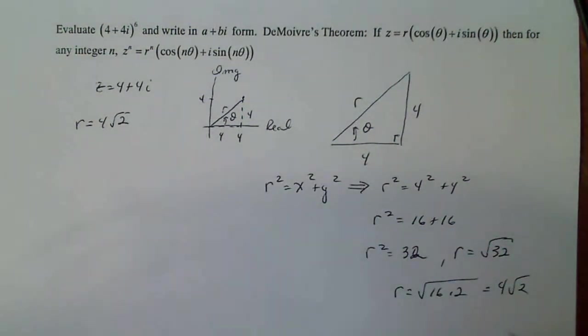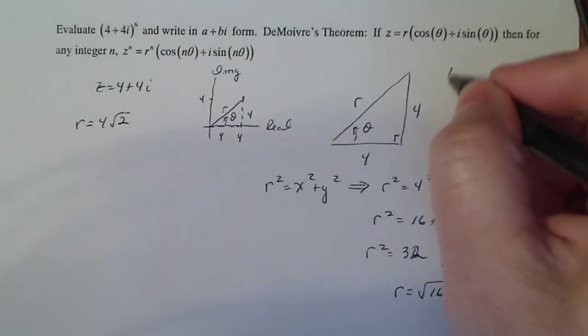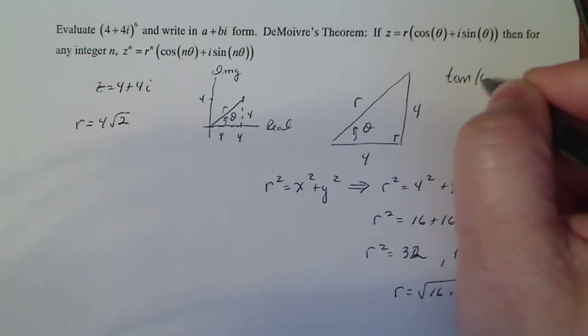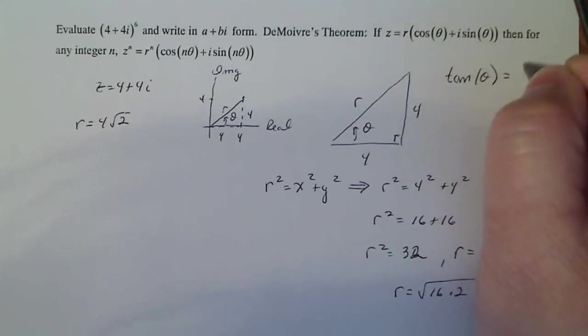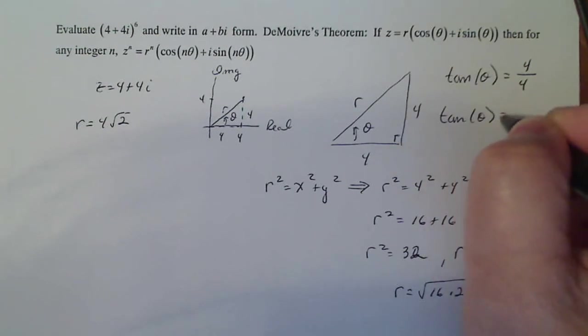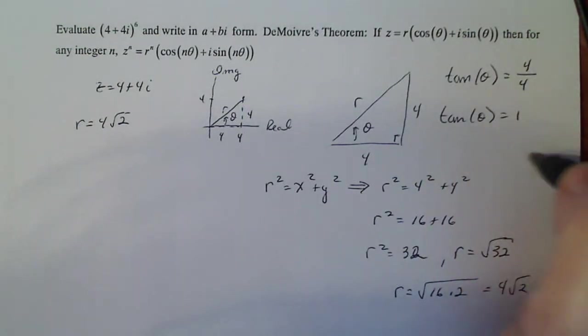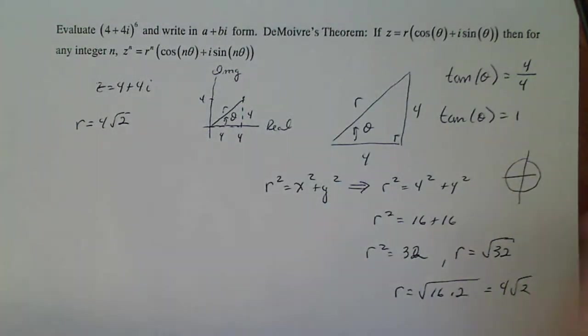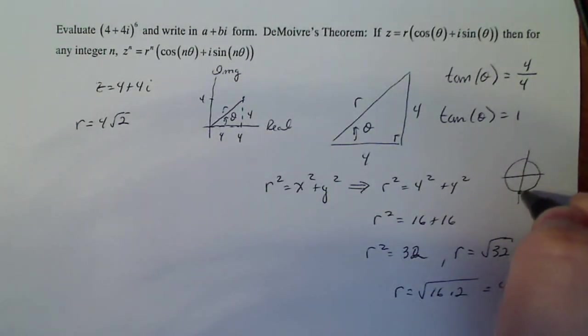Now I have to come up with theta. I know that the tangent of theta, according to Soh-Cah-Toa, is opposite over adjacent. So tangent of theta is 1. Now what angle, if I use my little tiny unit circle here, what angle between minus pi over 2 to pi over 2, not including the endpoints, has a tangent that's equal to 1?